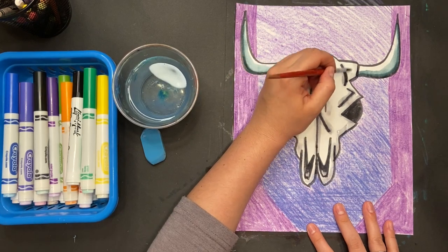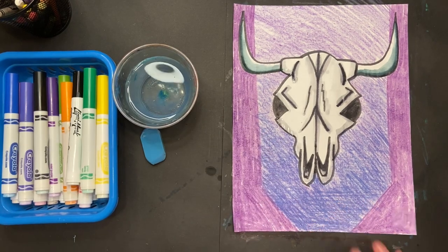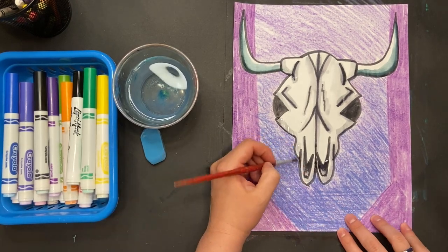So make sure some of it is still that pure white of the background of your paper. And then some of it should be all shaded in, just like this.